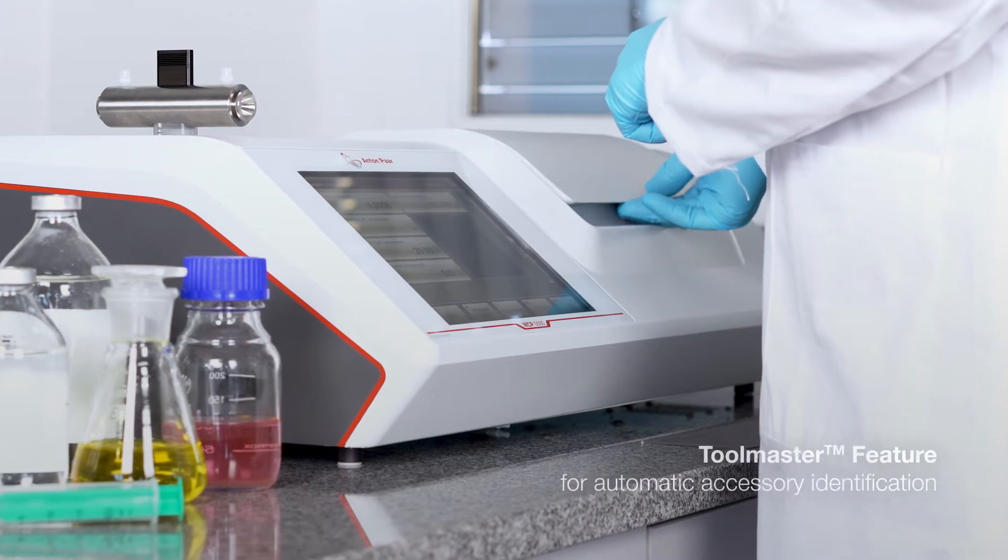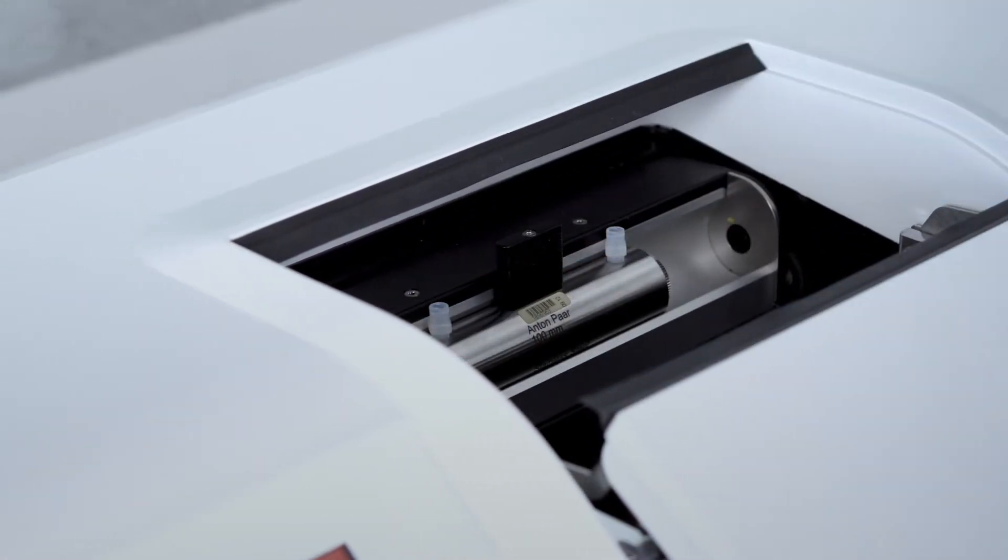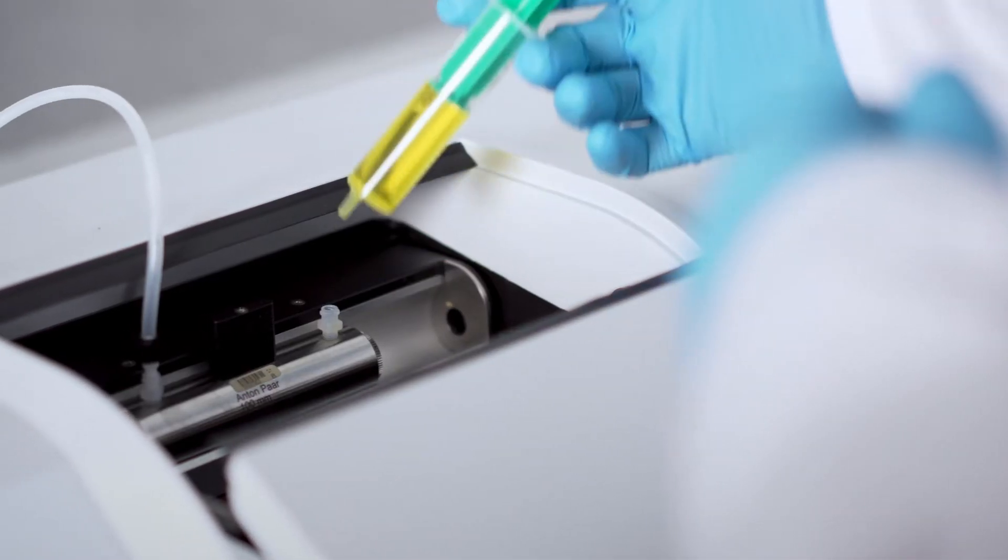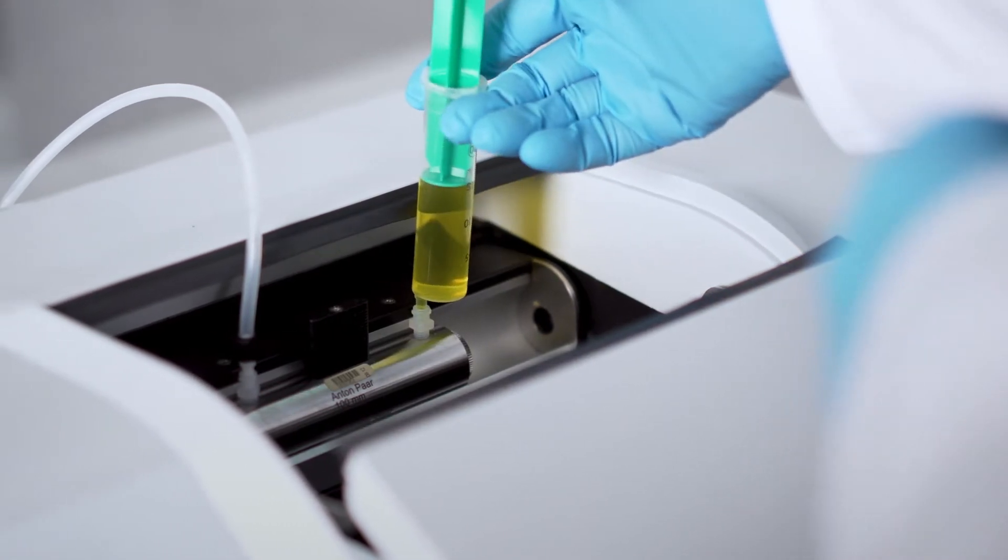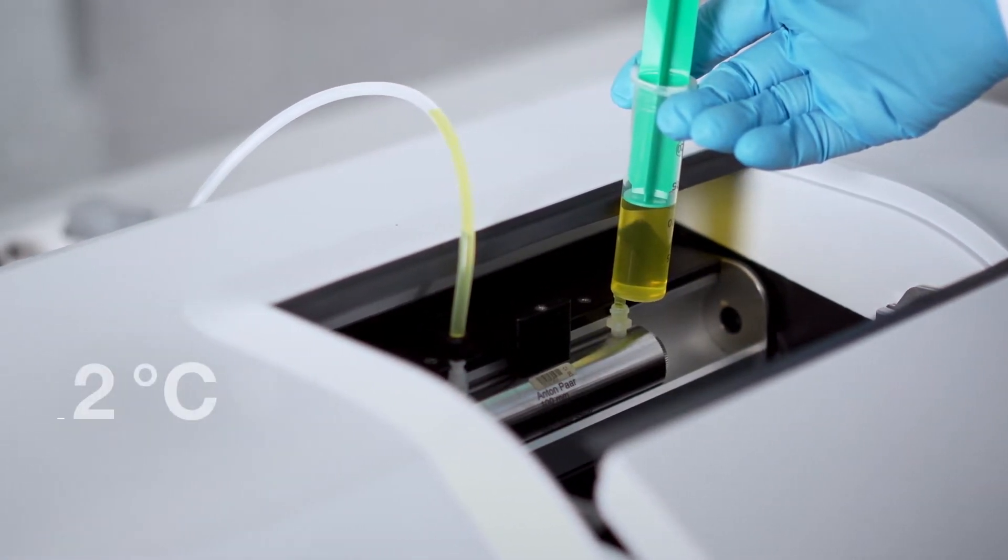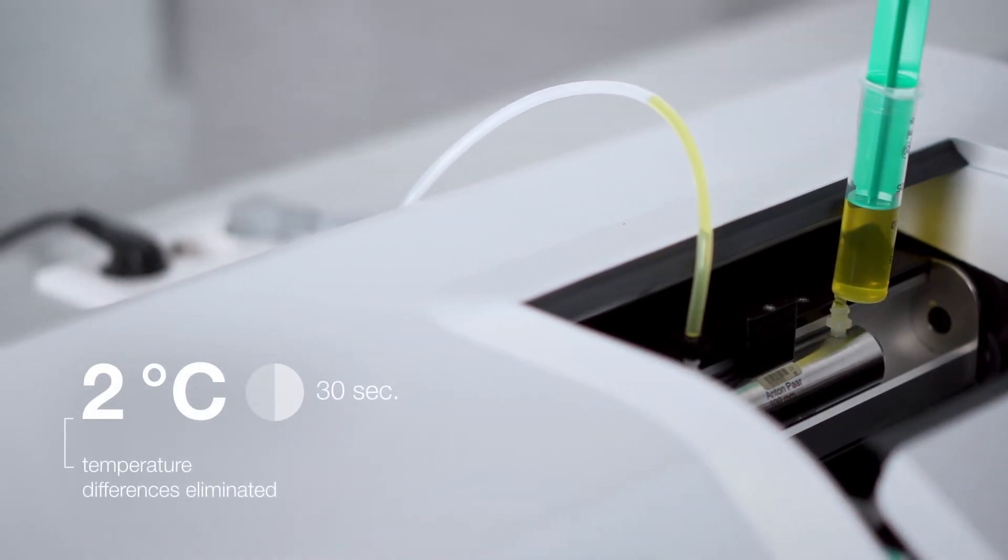The Toolmaster feature automatically identifies accessories and guides workflows, preventing errors before they occur. The world's fastest, most precise Peltier temperature control in a polarimeter eliminates sample temperature differences of 2 degrees Celsius in less than 30 seconds, reducing cycle times.